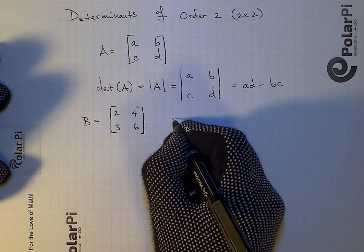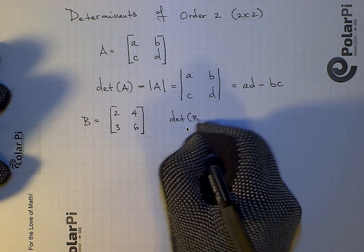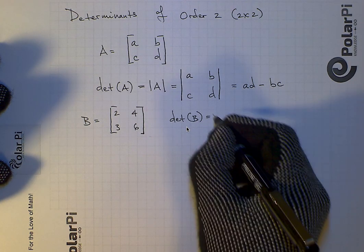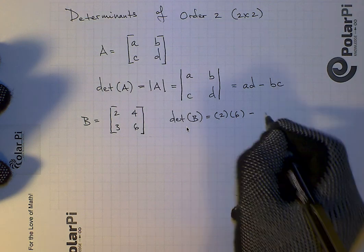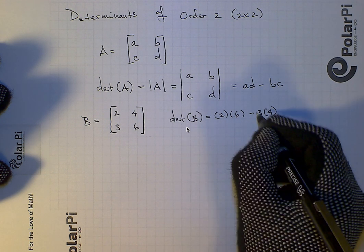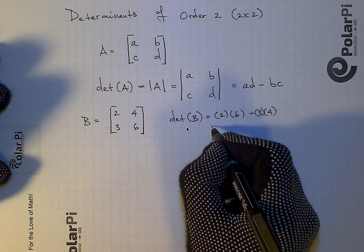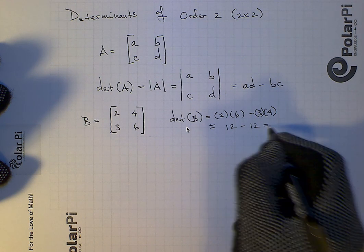So then if I ask you for the determinant of this matrix B, then you'd have to say that it's equal to 2 times 6, and then minus 3 times 4. And this is clearly equal to 12 minus 12, and therefore is zero determinant.